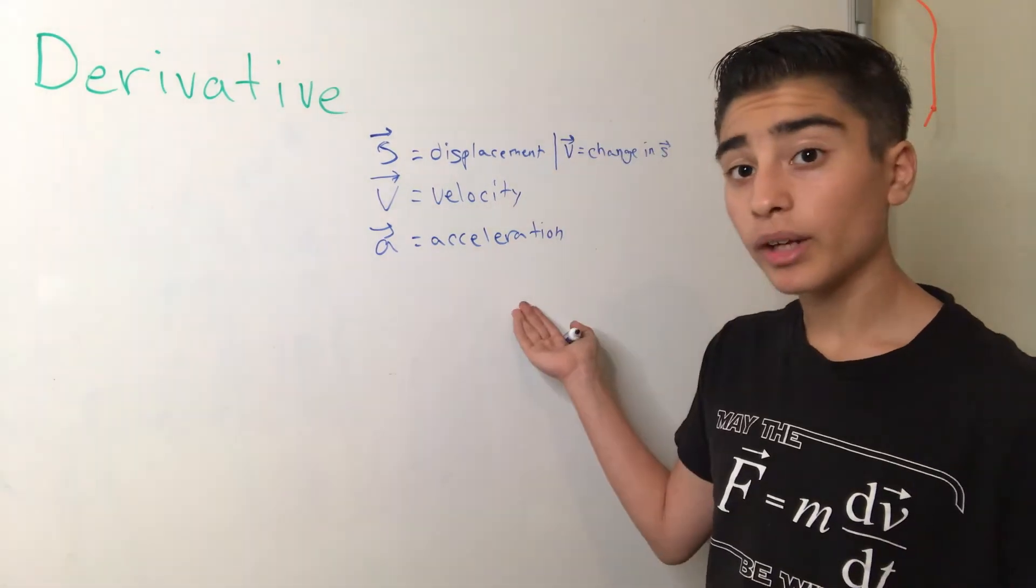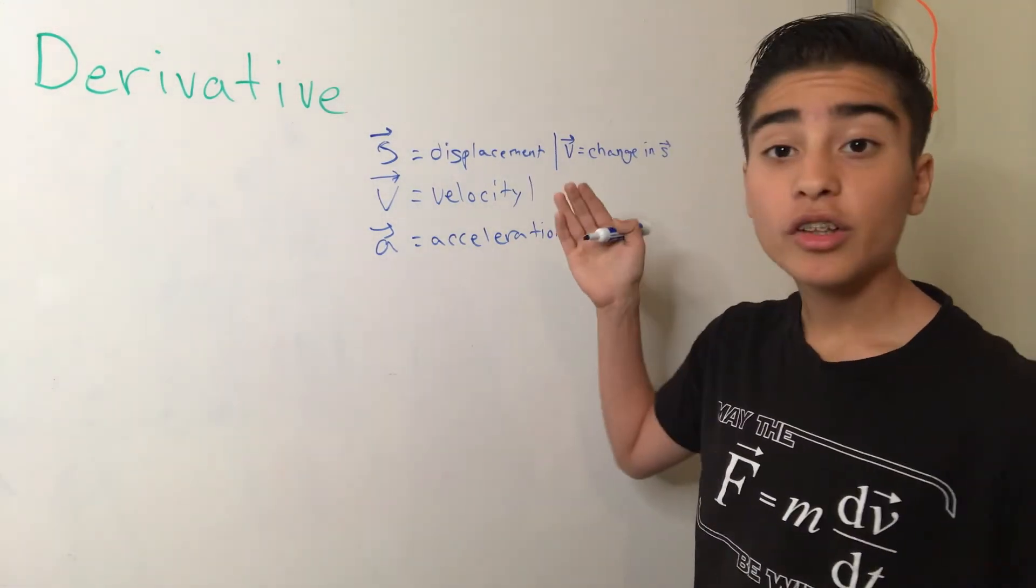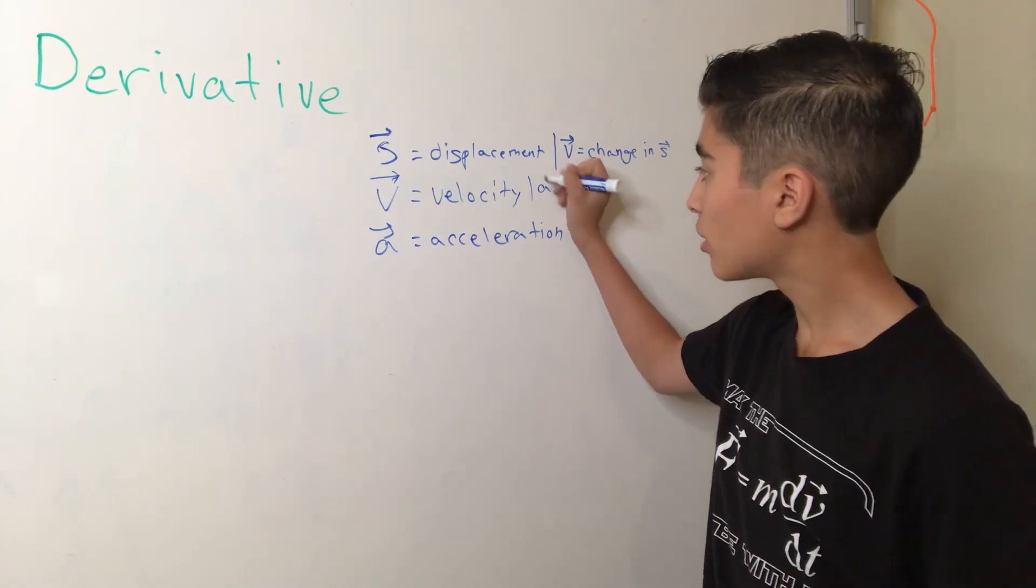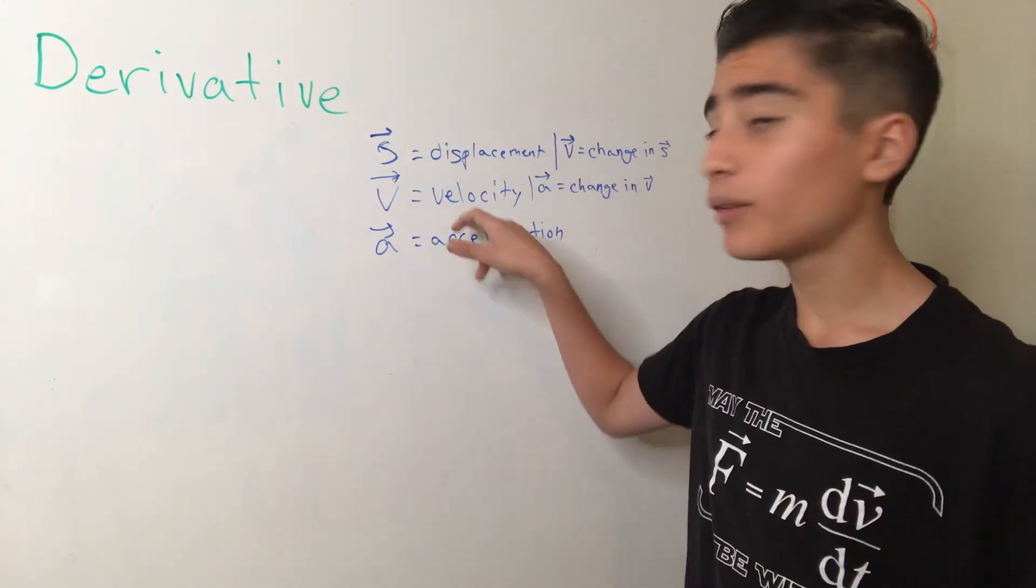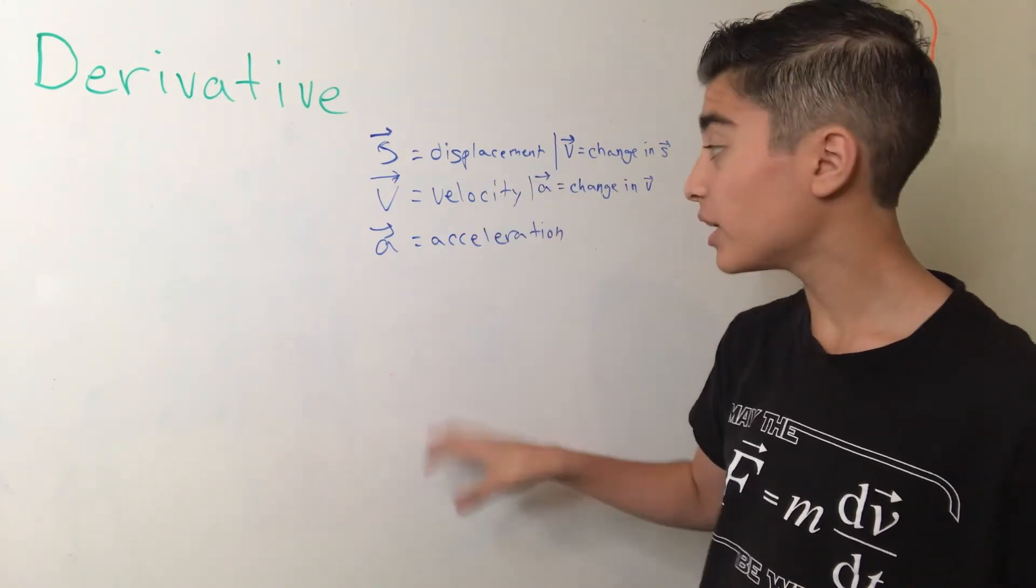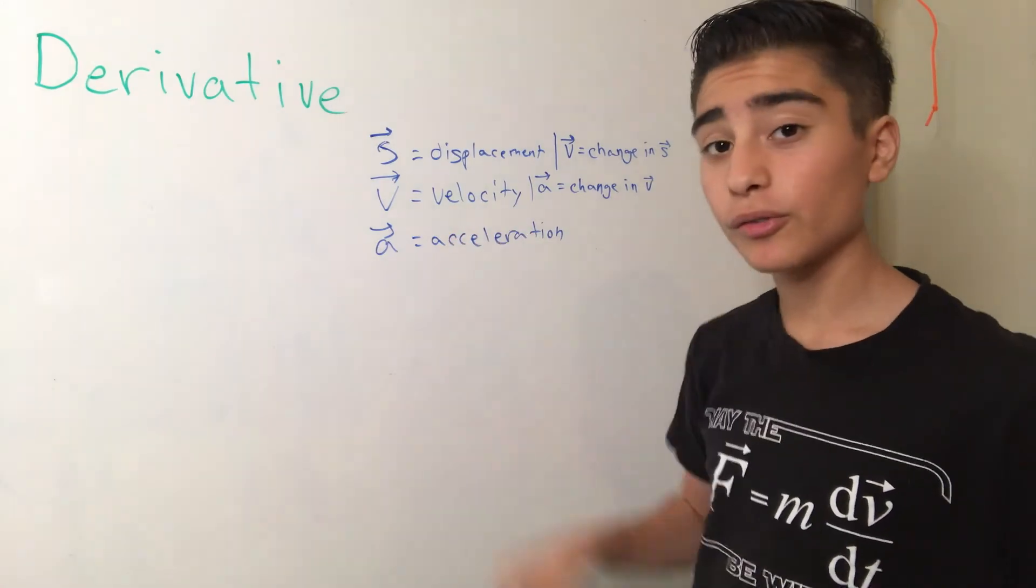And when something is accelerating, that's telling us how much this velocity is changing. So, you could say that velocity is the derivative of displacement and acceleration is the derivative of velocity.